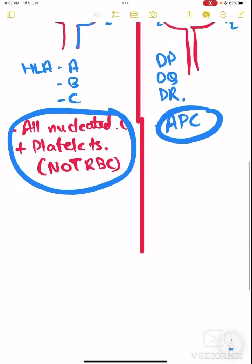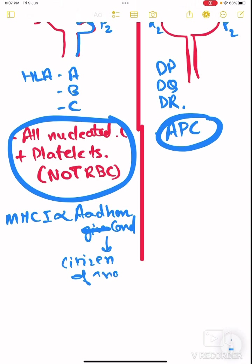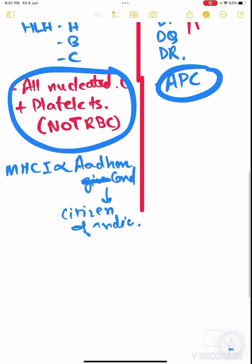So there is a way I can make you understand things. MHC class 1 is just like an Aadhaar card which is given by government of India. Aadhaar card tells that you are a citizen of India. And if someone doesn't have an Aadhaar card, this means they are not a citizen of India and they may have trespassed. And so what is the fate of them? To kill them, those who have invalidly come over here.